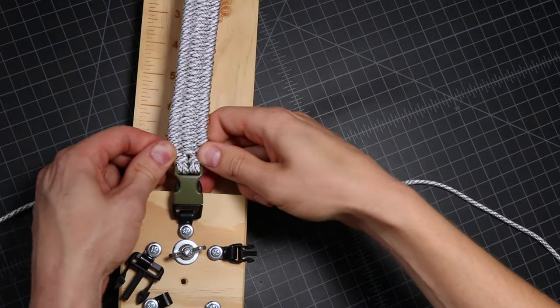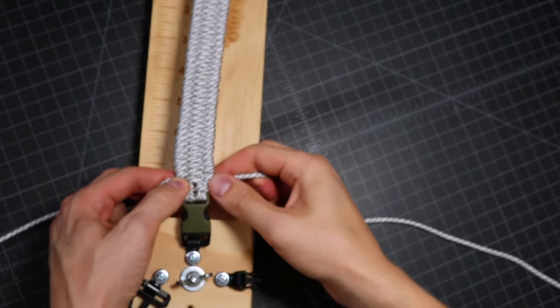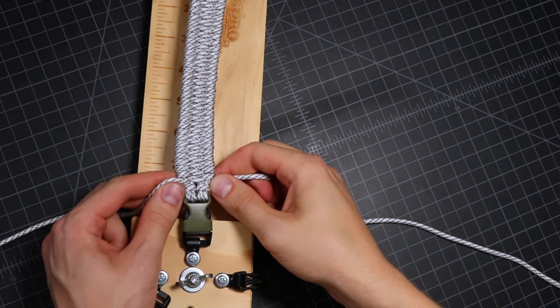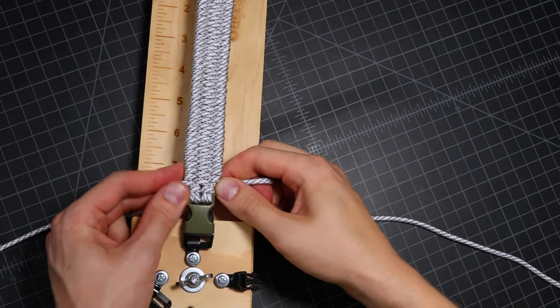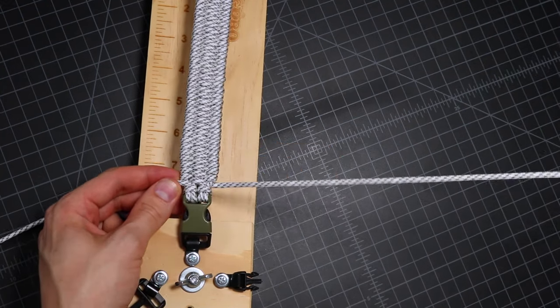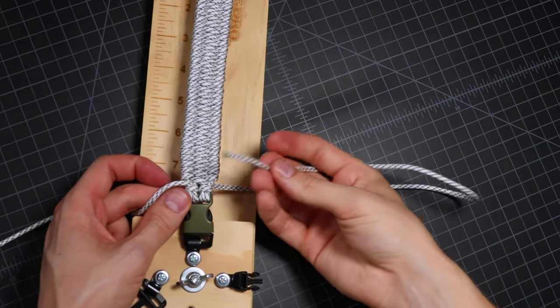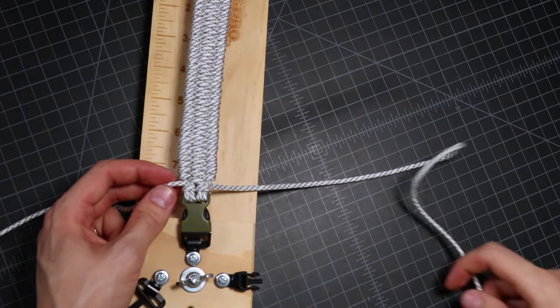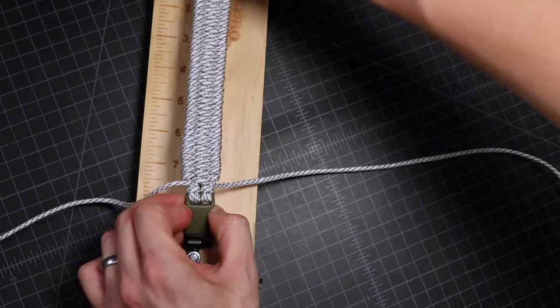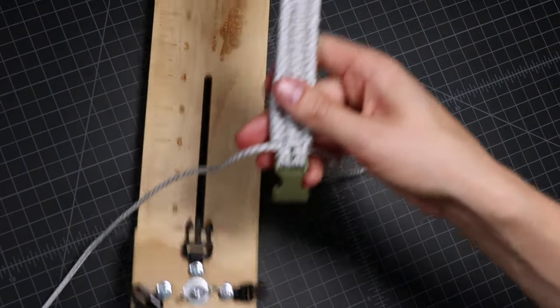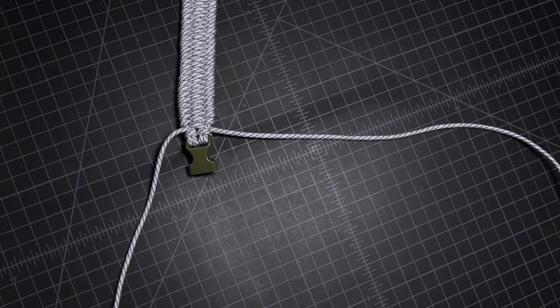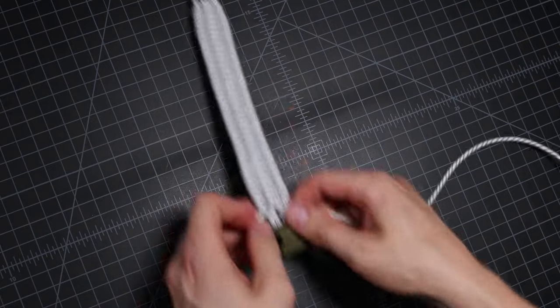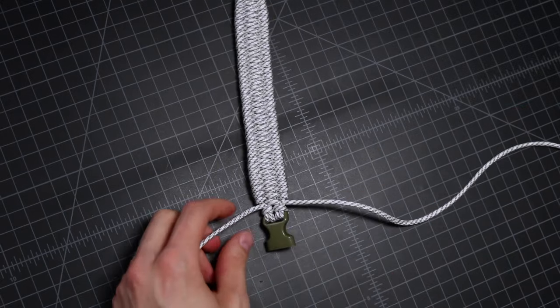Alright, so there we are done. These last couple weaves, it may help to have some fids on the end of your paracord. So I'll put a link to those in the description as well, but I was able to just slide the weave up enough to stick the end of the paracord through. So go ahead and take it off your jig at this point. And all we have left to do is to cut the ends and melt them.